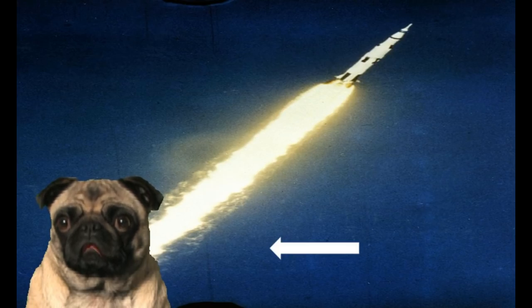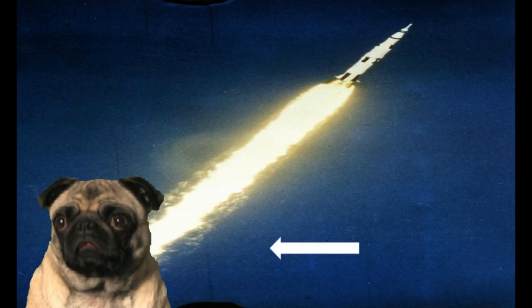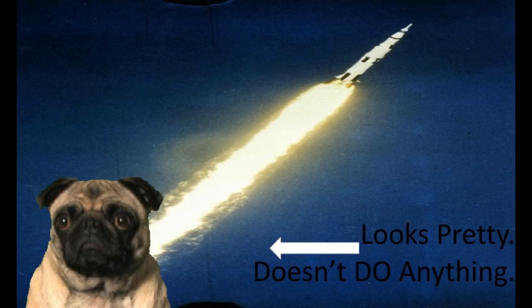That would be the impressive blast of flame stretching out behind the rocket. This is something that is commonly misunderstood. At the time these flames exit the engine nozzle, they've already done all the work they're going to do. The visible flame behind a rocket adds precisely zero thrust. That's right. Looks pretty. Doesn't do anything.